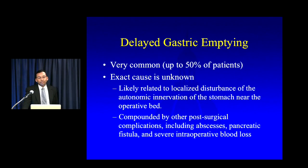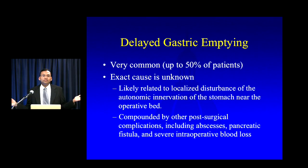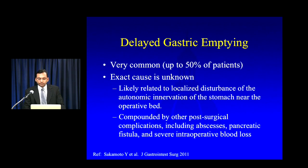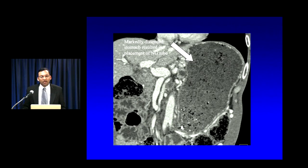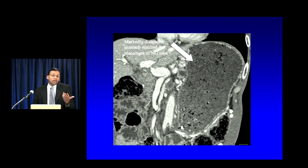The most common complication in the postoperative setting is actually something we don't think of as a big deal and don't tend to diagnose a lot on imaging: delayed gastric emptying, which affects probably about 50% of patients who have undergone a Whipple procedure. No one knows exactly why it happens — it may be because of some localized disturbance of the autonomic innervation of the stomach near the operative bed. We do know that it tends to be more common in patients who have other postoperative complications, including abscess, fistula, and intraoperative blood loss. It's primarily a clinical diagnosis — the surgeons define it as prolonged need for a nasogastric tube.